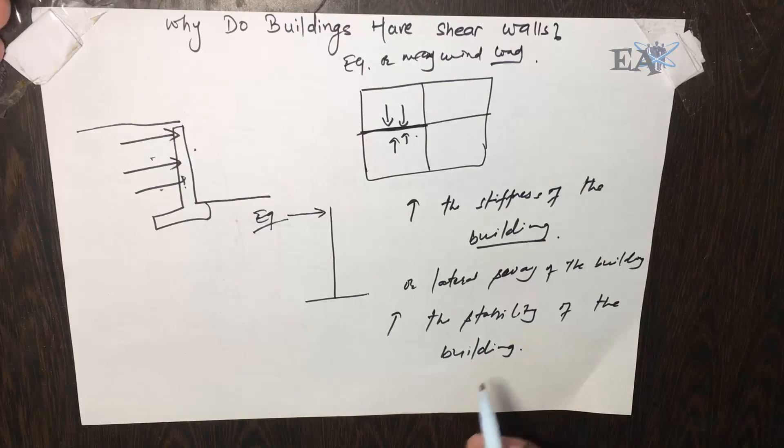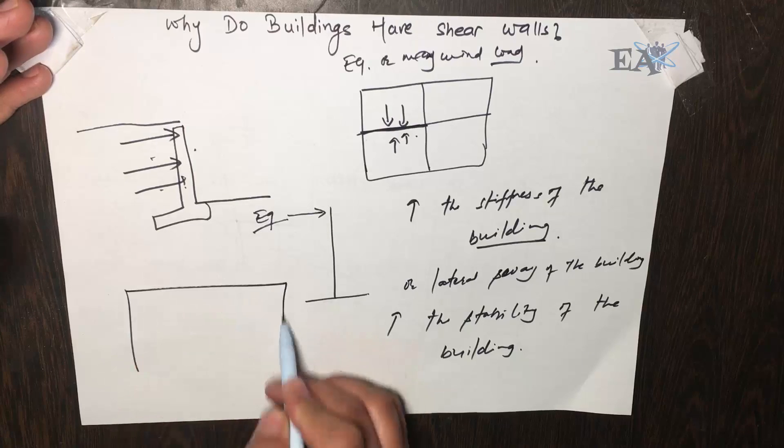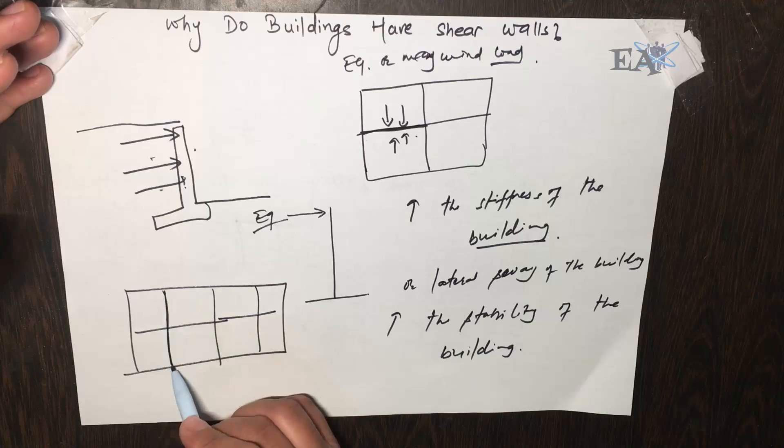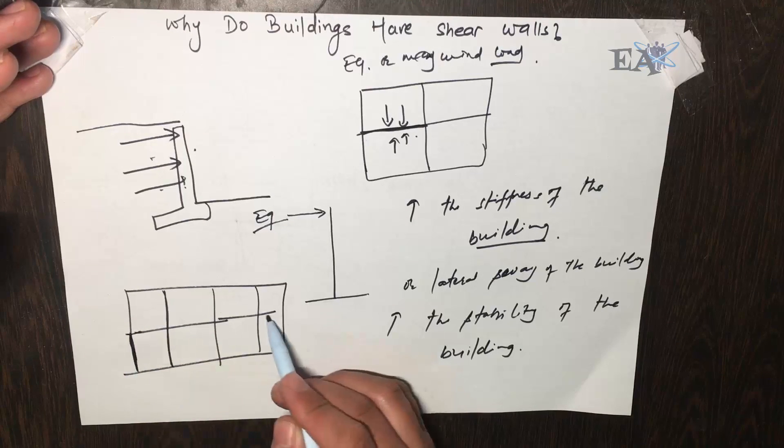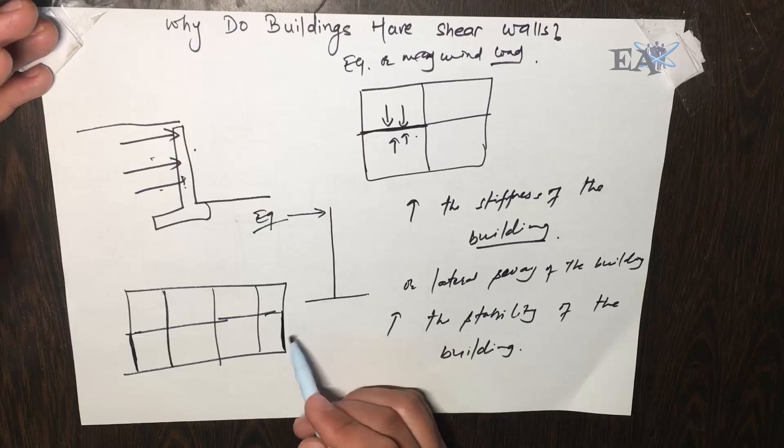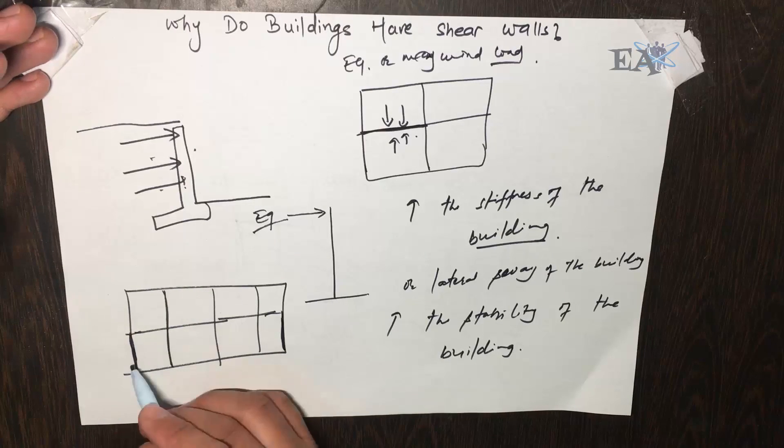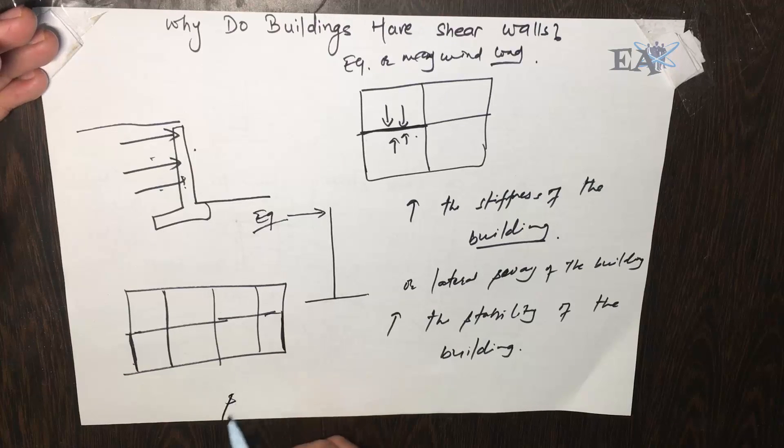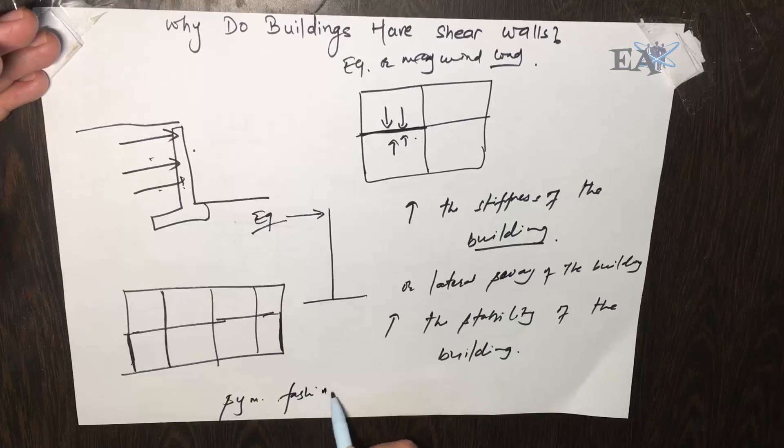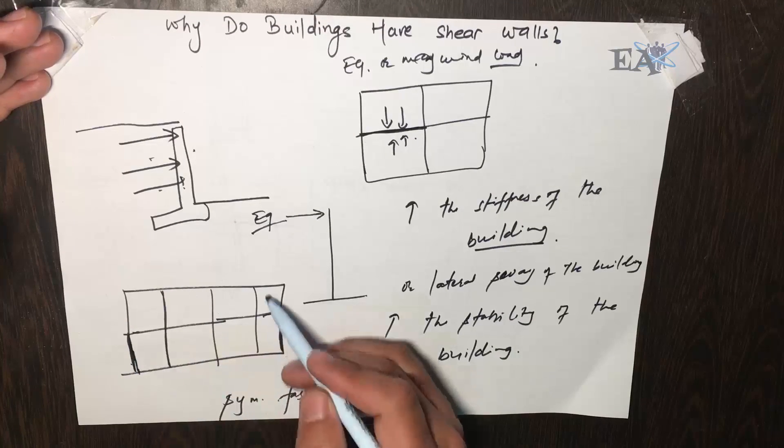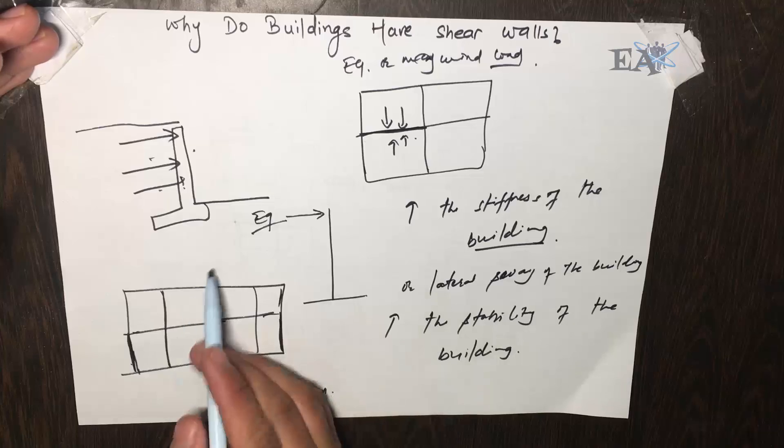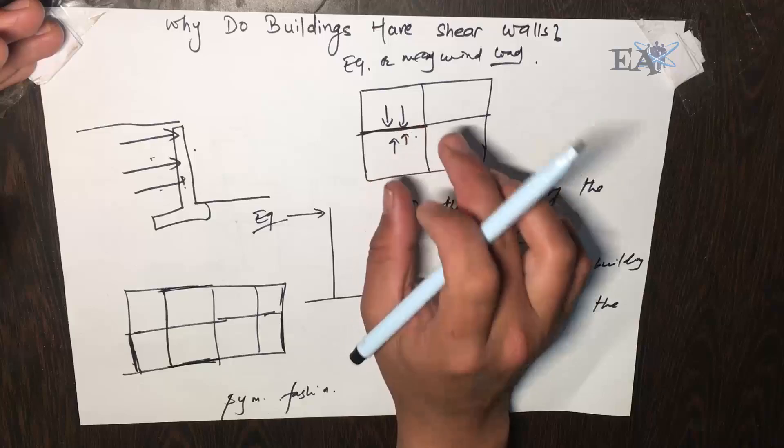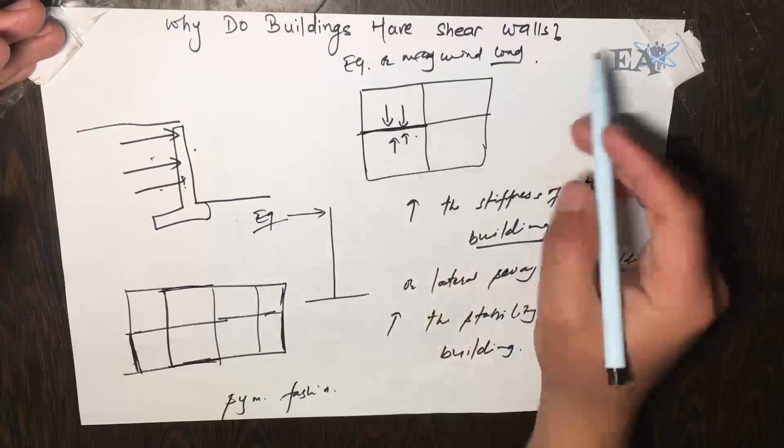One thing that should be considered is that if this is your floor plan and you got walls like this, if you got a shear wall over here then you need to have a shear wall over here as well. This is the best method to add a shear wall in a building. You need to have these shear walls placed in a symmetrical fashion, not in a random fashion.